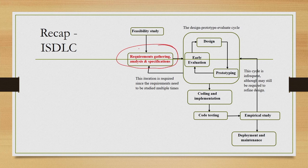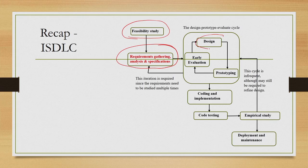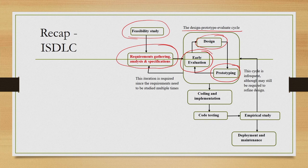To recollect, there are several stages: requirement gathering, analysis and specification is the stage from where we started our discussion. We have not discussed in detail the feasibility study stage, which is anyway not very relevant for our core concepts. After requirement there is the design stage, prototyping stage, and evaluation of prototyping. These three sub-stages constitute the design-prototype-evaluate cycle. Design refers to both design of the interfaces and interactions, as well as design of the system in terms of modules. Those modules, once finalized, are to be implemented using some programming language — that is the coding and implementation stage.